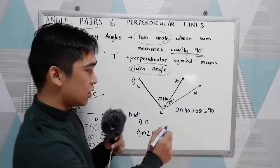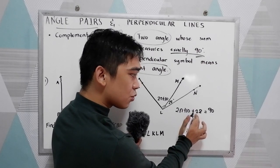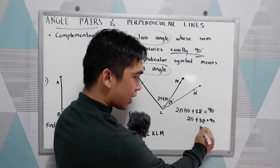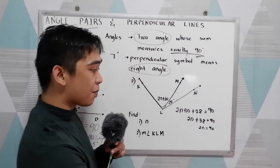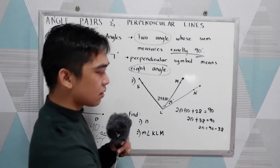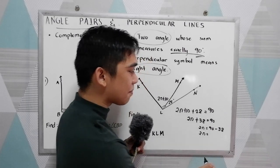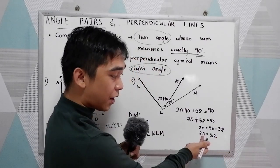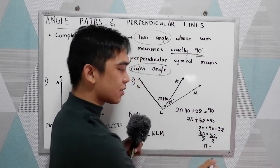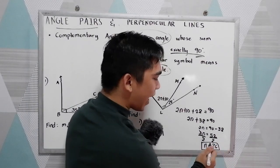Solve for N. We have 2N plus 10 plus 28, which gives 2N plus 38, equal to 90. So 2N is equal to 90 minus 38, which is 52. To get N, we divide by 2. So N equals 52 divided by 2, which is 26. The value of N is 26.